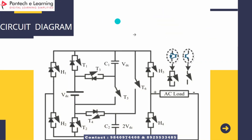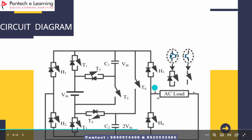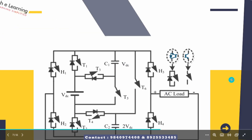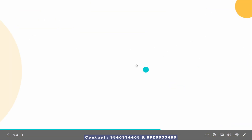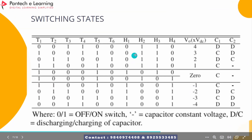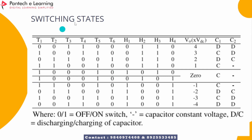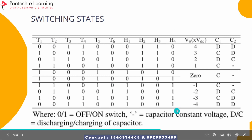This is our circuit diagram of this 9-level boost inverter. Here, we use 10 switches and two capacitors for charging and discharging. This is our switching state table of this 9-level inverter.